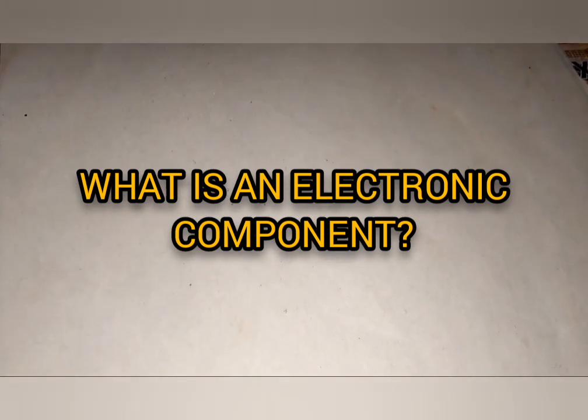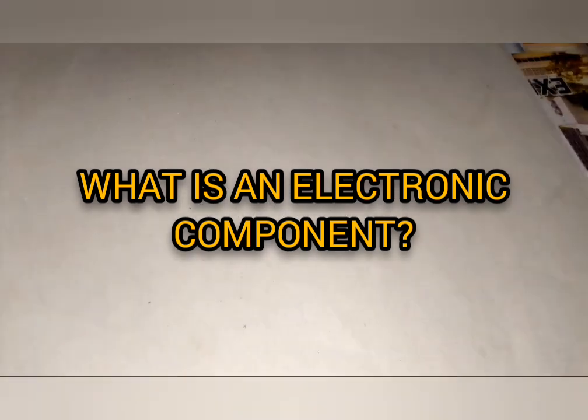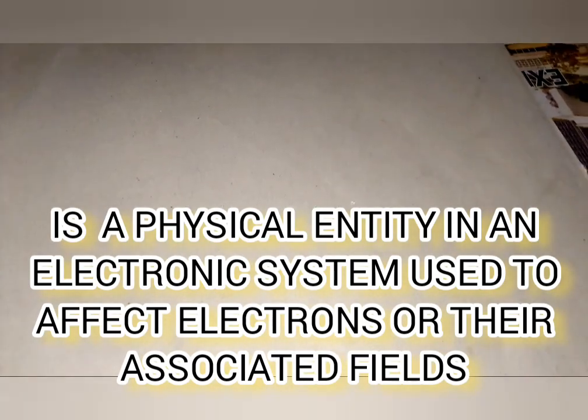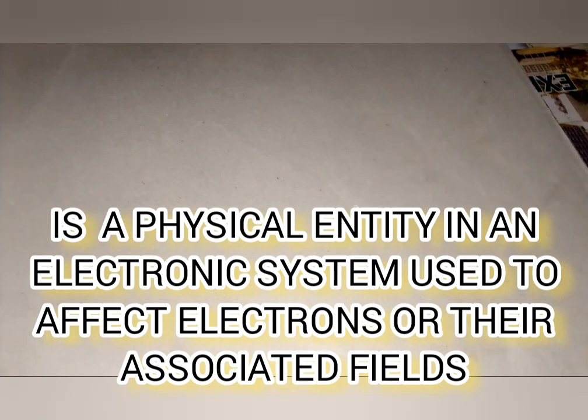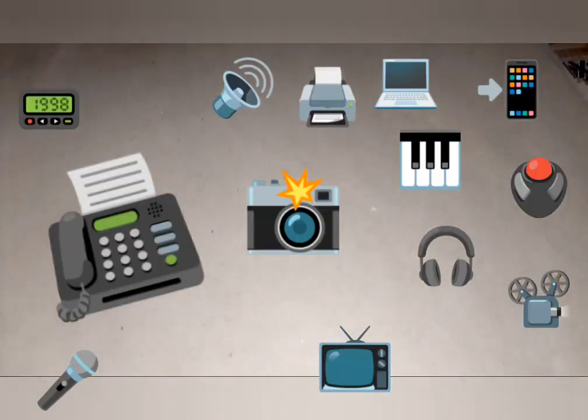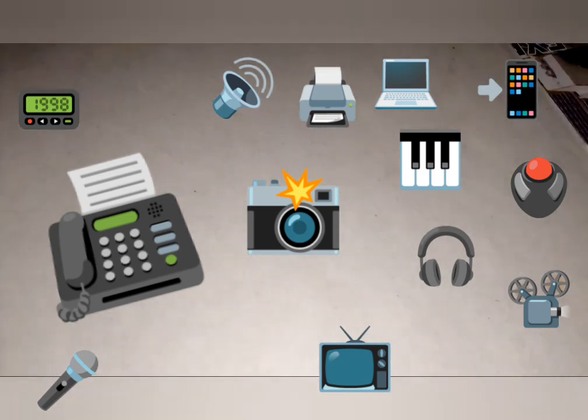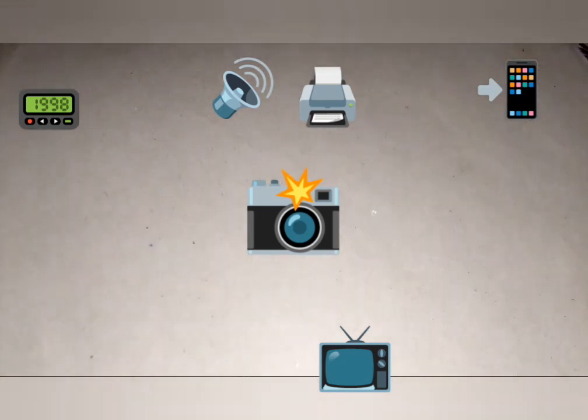What is an electronic component? An electronic component is a physical entity in an electronic system used to affect electrons or the associated fields. To make that simple, electronic components are just a few components you will see on motherboards. Their main function is to affect electrons and the associated fields. Let's go to the classification of electronic components.